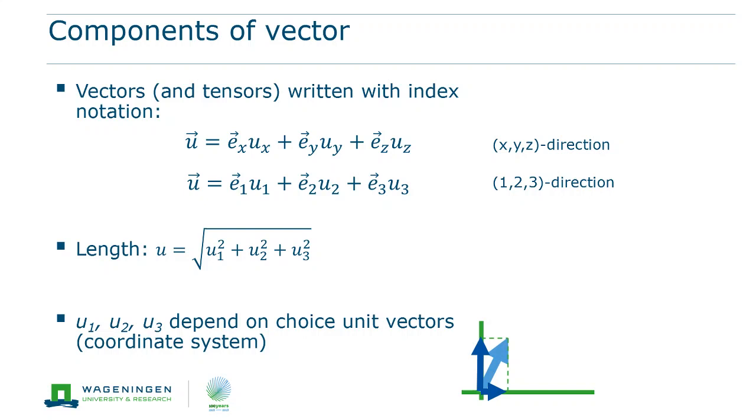We should keep in mind that the unit vectors define the coordinate system. Often, we call the axes of a coordinate system x, y, and z. But later on, it will become clear that it is sometimes also practical to number them as 1, 2, and 3. These two methods are completely equivalent, and they can be used to describe exactly the same vector.